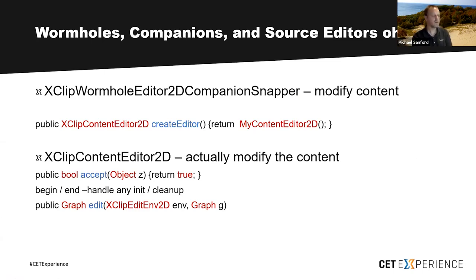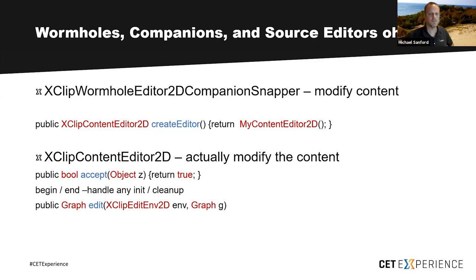These are basically content editors — so you can edit your snapper's graphs instead of the wormhole's graphs. The class is the XClipWormholeEditor2DCompanionSnapper — quite a long name. It's for modifying the content of your snappers. There is one additional method to add for creating your editor, and the editor is where you actually do the work of modifying the graphs. You could actually have one companion snapper but provide a whole bunch of different editors for different types of editing — maybe one applies to one type of filter and one applies to a different type.